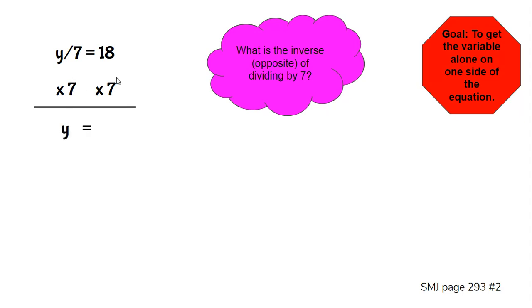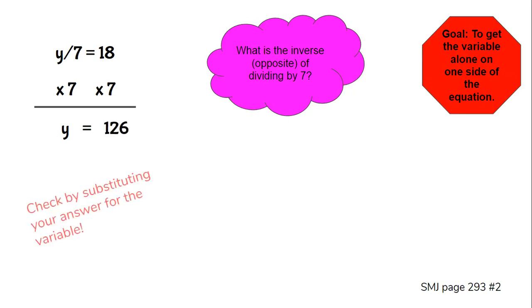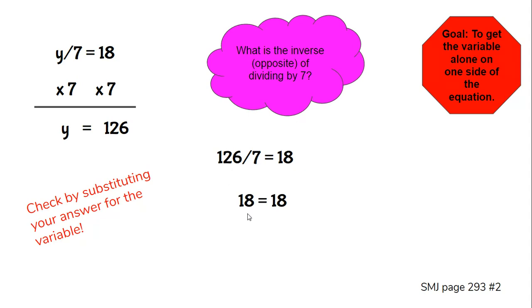On the right side, 18 times 7 equals 126. We can check by substituting the answer for the variable: 126 divided by 7 equals 18. It equals 18 — 18 equals 18 — that's how we know we're correct.